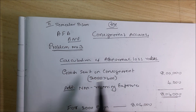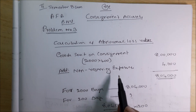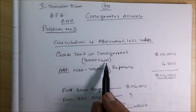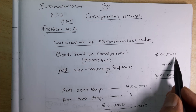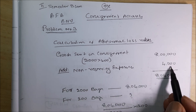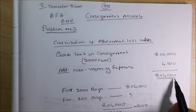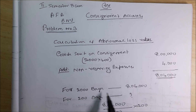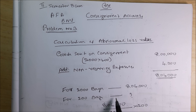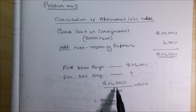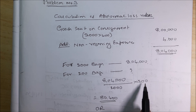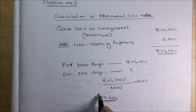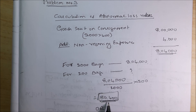Calculation of abnormal loss value — Method 1: Goods sent on consignment = 2000 × 400 = Rs 8,00,000. Add non-recurring expenses: Rs 4,000. Total = Rs 8,04,000. For 2000 bags it is Rs 8,04,000. You have lost 200 bags. Value of abnormal loss = 8,04,000 ÷ 2000 × 200 = Rs 80,400.